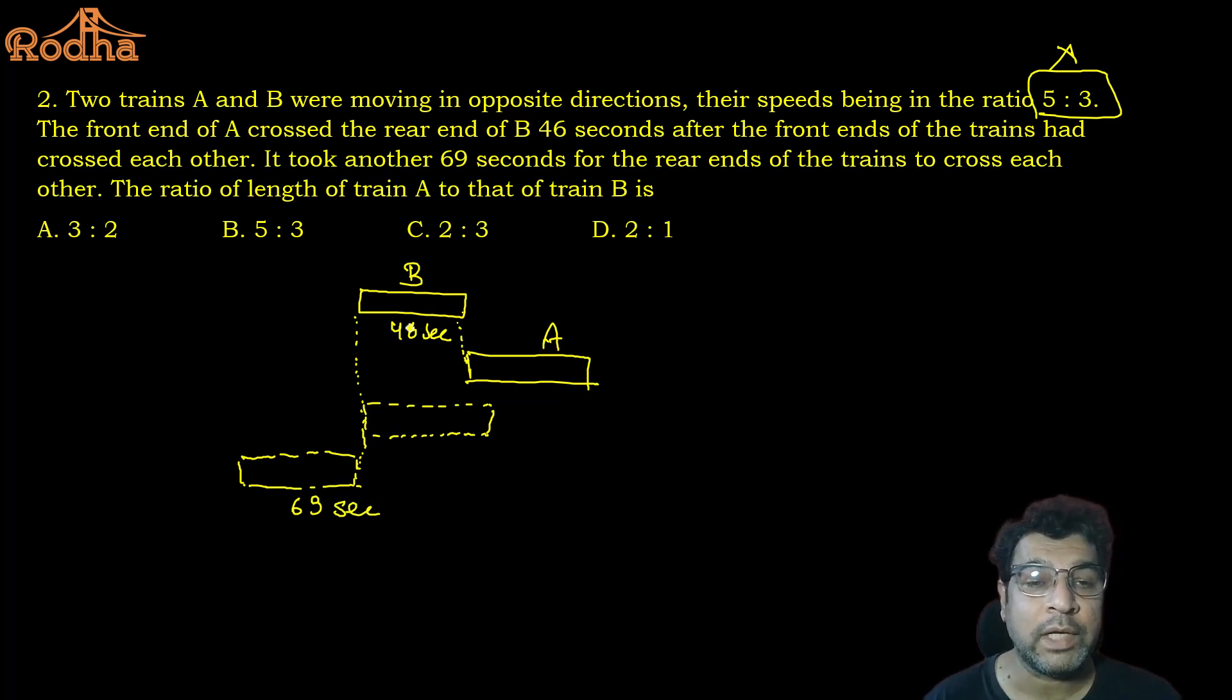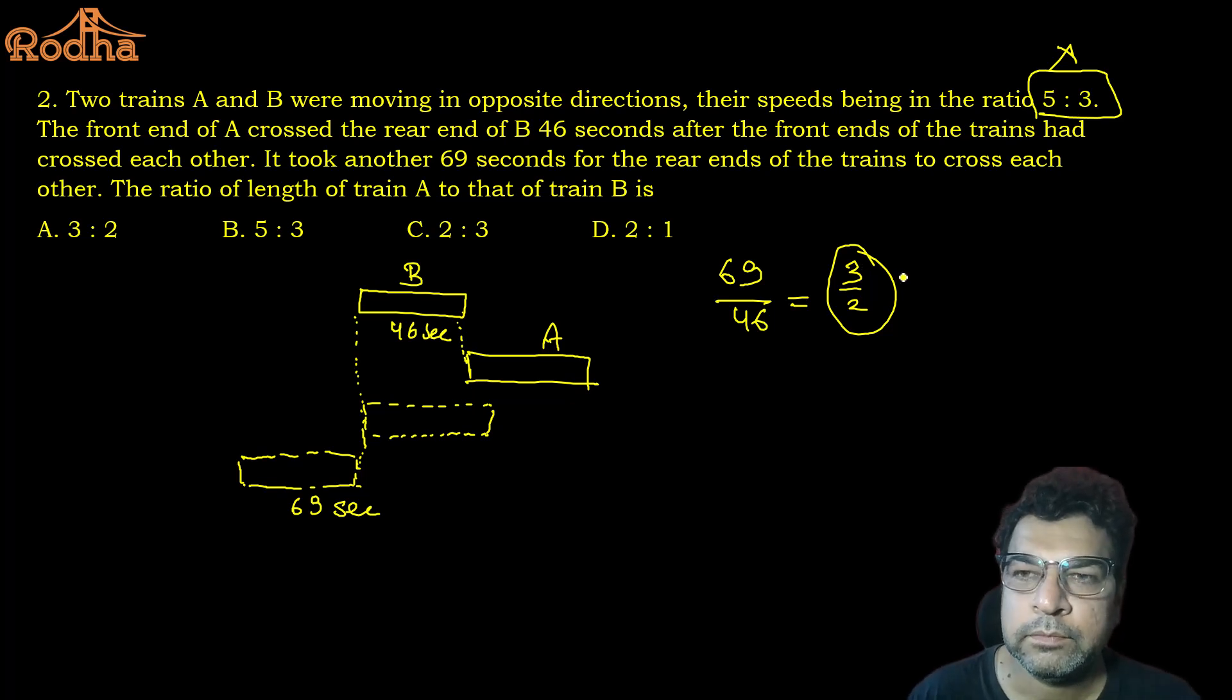So whatever is the ratio of time will be the ratio of distance or the ratio of length of the trains. What you need to find is the ratio of length of A and B. So A is 69 corresponding and B is 46. That's the ratio of time, that is also the ratio of distance, that is the length of the train. That's your answer. The trick was that this speed ratio is useless and then you can simply apply this common sense.